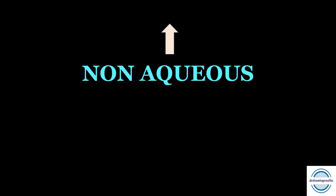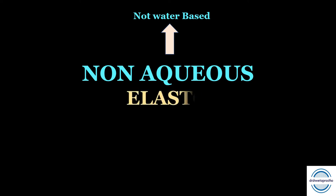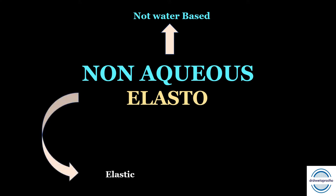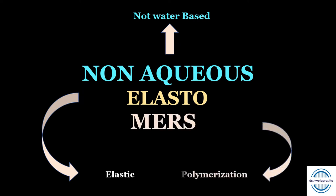Non-aqueous elastomers — from the name itself: non-aqueous means they are not water-based. Elastomers: 'elasto' because they are elastic in nature, their mechanical behavior shows elasticity, and 'mers' because they set by polymerization. All non-aqueous elastomers are available in five viscosity classes or consistencies.